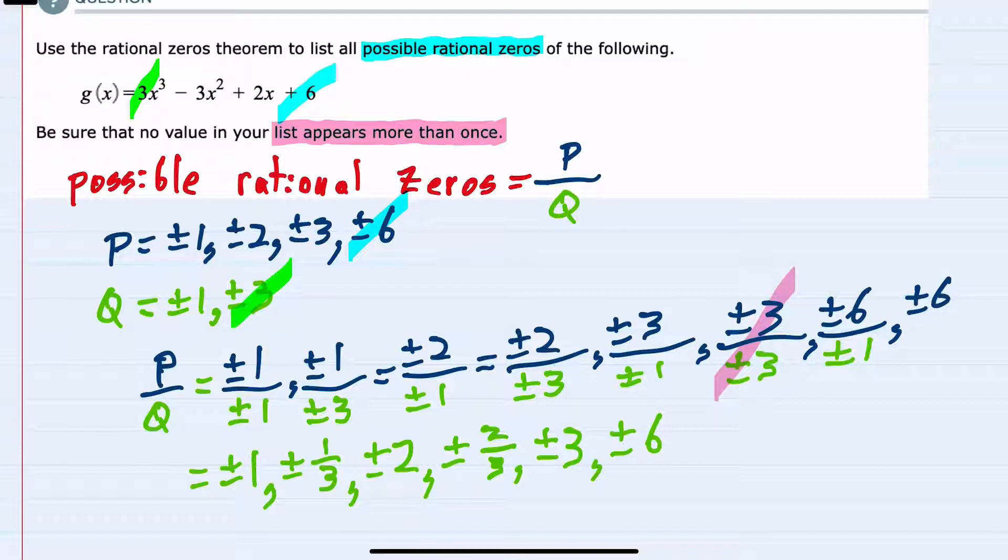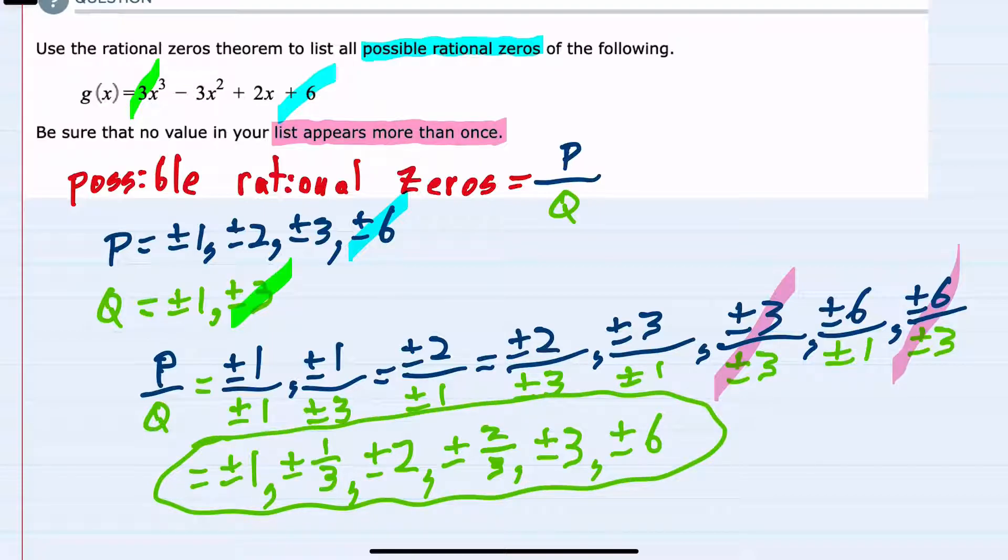So plus or minus six over plus or minus three, this would simplify to plus or minus two. But again, I already have this one in my list, so I'm not going to add it again, it's a duplicate. My potential zeros would all be from this list.